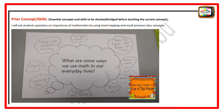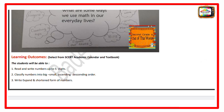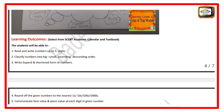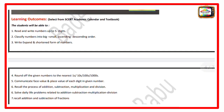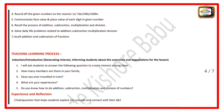In this lesson plan, there are 2 to 3 periods for learning outcomes. The students will be able to read and write numbers up to 5 digits, classify numbers into big, small, ascending, and descending order, write, expand and shorten the form of numbers, round given numbers to the nearest ones, tens, hundreds, thousands, and communicate the face value and place value of each digit in a given number.